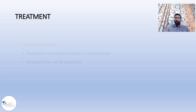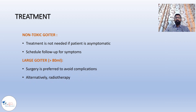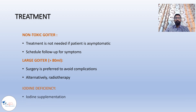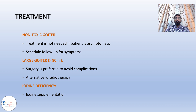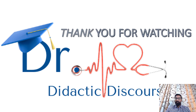For treatment: in non-toxic goiter, treatment is not preferred if the patient is asymptomatic — we schedule follow-up for symptoms. However, for large goiter with volume greater than 80 ml, surgery is preferred to avoid complications; radiotherapy may be considered as an alternative. In case of iodine deficiency, the patient can be supplemented with iodine. I hope you are now clear about goiter, its clinical features, classification, and treatment. Thank you for watching.